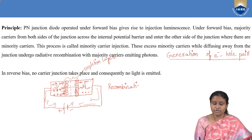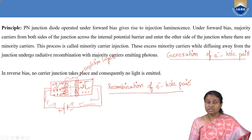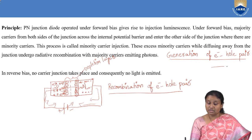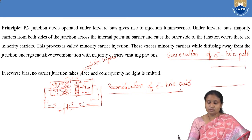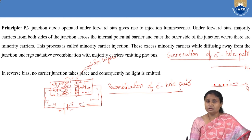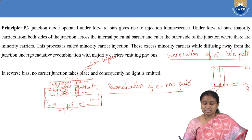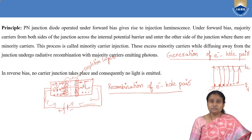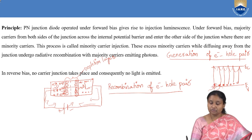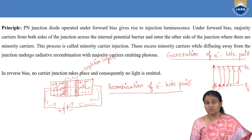In generation of electron-hole pair, EC represents the bottom-most energy level of the conduction band and EV represents the top-most energy level of the valence band. Electrons in the valence band, when supplied with energy, get excited to the conduction band. Once electrons make this transition, the vacant electron site acts as a hole and we have one free electron in the conduction band. So per transition we get one electron and one hole — this process is called generation of electron-hole pairs.